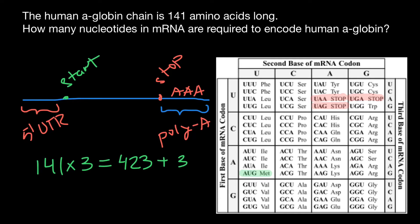The 3 additional nucleotides specify the stop codon. So the total number of nucleotides is going to be 426.